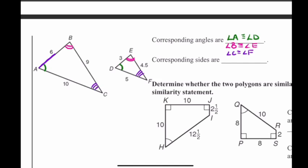Now that we have the three angles, we can match the sides as well. Side AB is comprised of the green and pink angles, so the corresponding side is DE — AB is similar to DE. To find the scale factor, divide AB by DE: AB is 6, DE is 3, and 6 divided by 3 is 2.